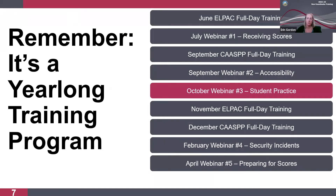Now we want to remind you about this year-long training plan for new coordinators. In June, we held a full-day training for ELPAC coordinators hosted by about 15 County Offices of Education throughout the state. In July, we had our first new coordinator training webinar on receiving scores. In September, we had a full-day training for CAASPP coordinators, also held by the 15 COEs across the state, and webinar number two — a deep dive into accessibility. And here we are, webinar number three in October on student practice.